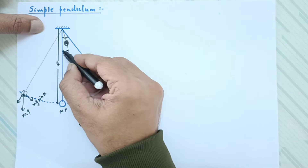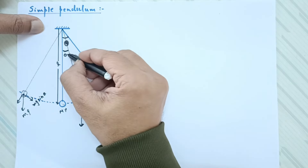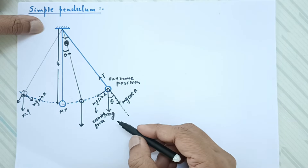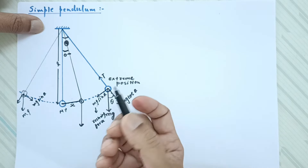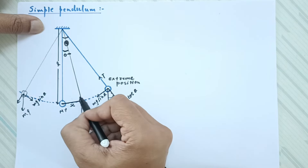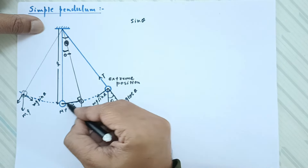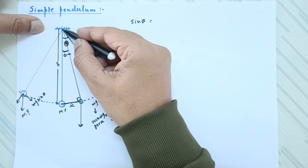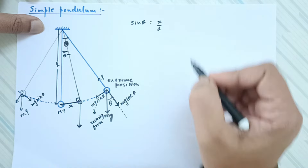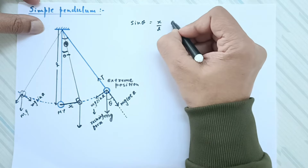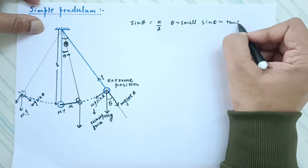Now I am going to make angle theta small — less than five degrees. When theta is very small, the displacement from mean to that position is x. The angle at the top appears to be almost 90 degrees. So sin theta equals perpendicular over hypotenuse, which is x over l. And we know the identity that when theta is small, sin theta is approximately equal to tan theta, which is approximately equal to theta.